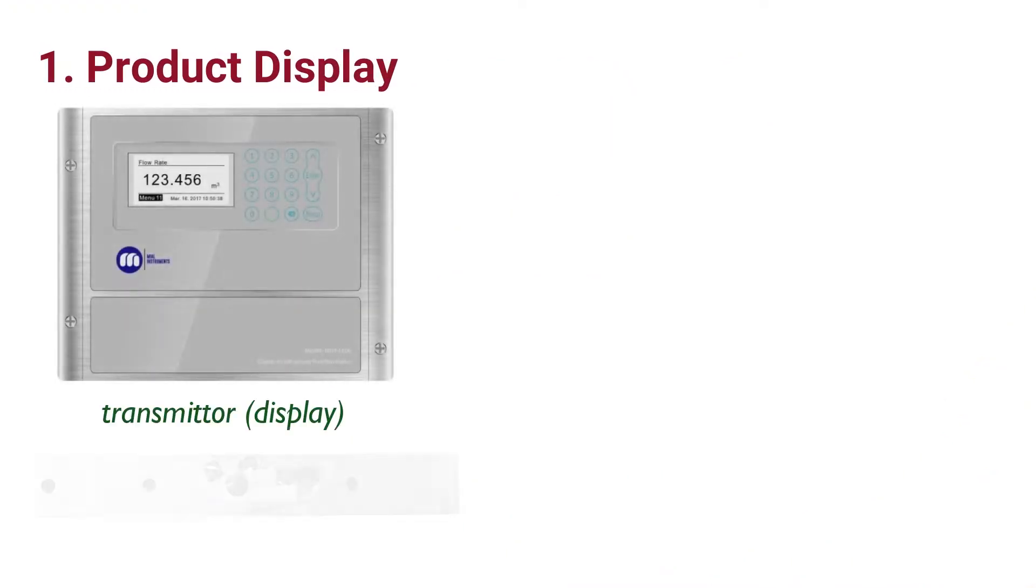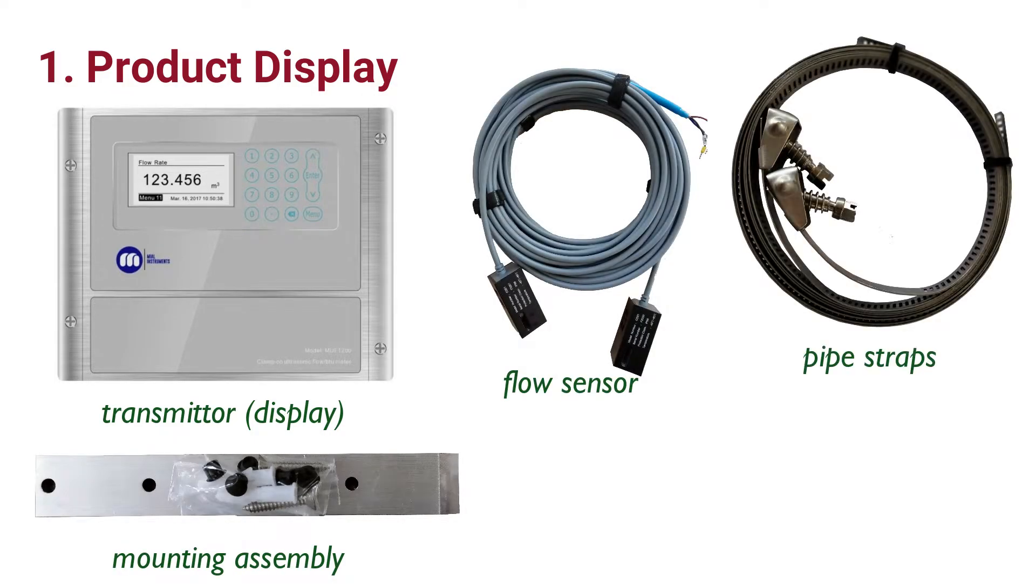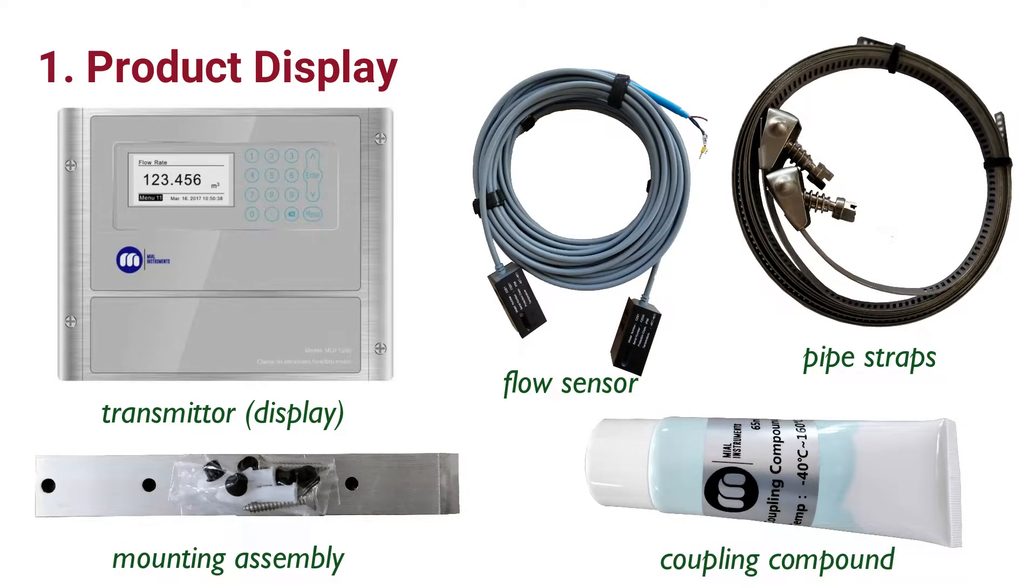In the flow meter packing box, the following components are included in ultrasonic BTU meters: one pair of temperature sensors and thermal coupling compound. In addition to these components, one document envelope contains the user manual and other documents included in each packing box.